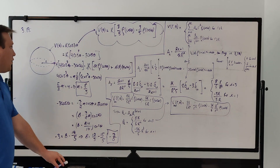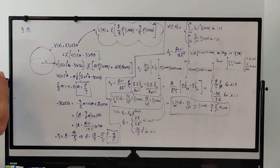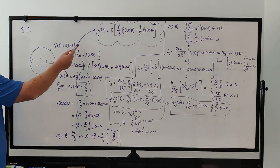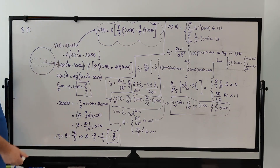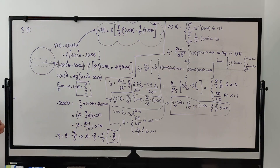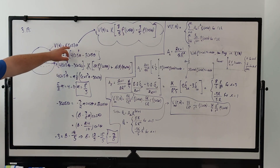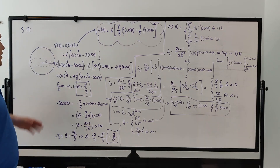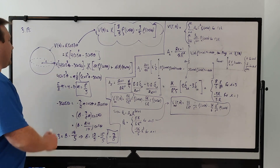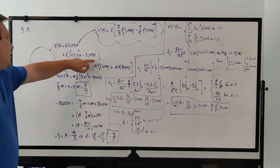Let's start this problem. Our first step is to express our known potential on the surface as a function of Legendre polynomials. There is a trig identity you can use for cosine of 3 theta: cosine of 3 theta equals 4 cosine cubed of theta minus 3 cosine of theta.